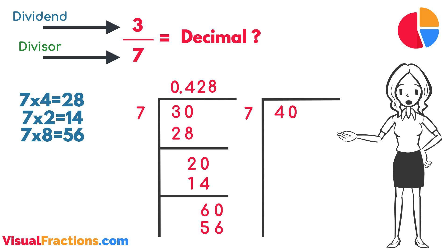We add another zero to get 40. How many times does seven go into 40? Five times. Adding this five to our quotient gives us 0.4285. After multiplying five by seven to get 35 and subtracting it from 40, we're left with a remainder of five.